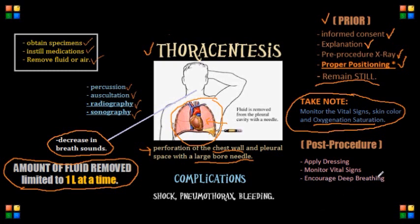The important post-procedure interventions as the nurse: first, we're going to apply a dressing over the puncture site, and we're going to position the client on the unaffected side for at least one hour. We're going to keep monitoring the client's vital signs and, most importantly, the respiratory status — such as respiratory rate, rhythm, and oxygenation status — and that would be done hourly for the first several hours right after the procedure. We're also going to encourage the patient to do deep breathing, which will help with lung expansion.